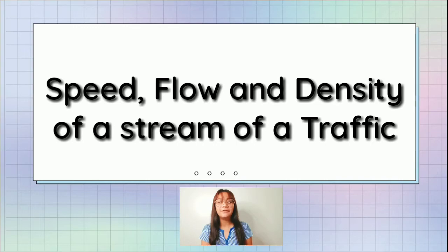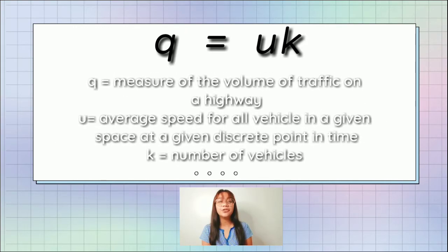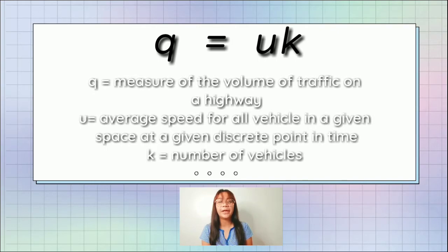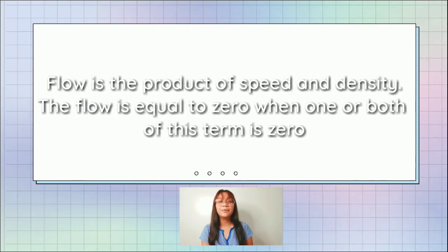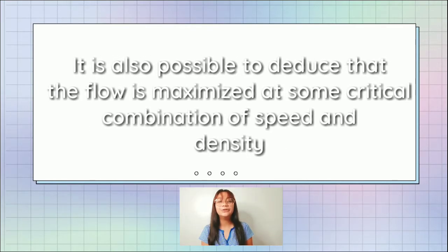This topic has the formula Q equals U times K, where Q is the measure of the volume of traffic on a highway, U is the average speed for all vehicles in a given space at a given discrete point in time, and K is a measure of the numbers of vehicles. Because flow is the product of speed and density, the flow equals zero when one or both of these terms is zero. It is also possible to deduce that the flow is maximized at some critical combination of speed and density.